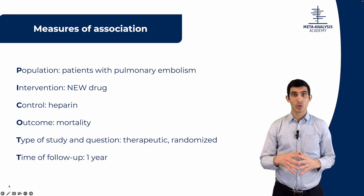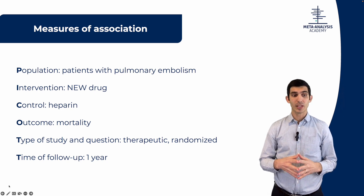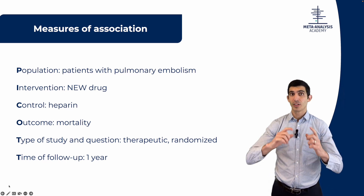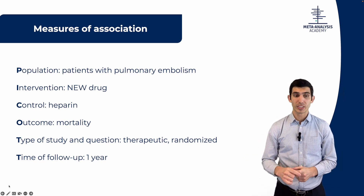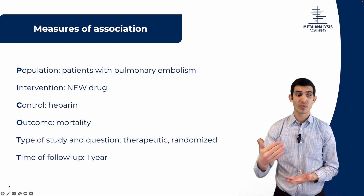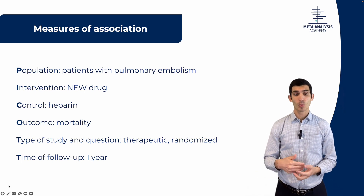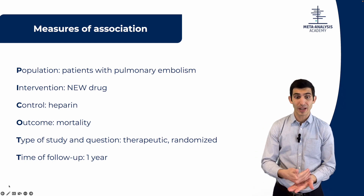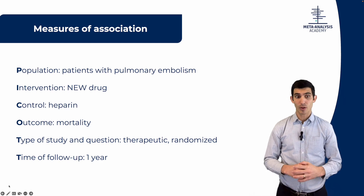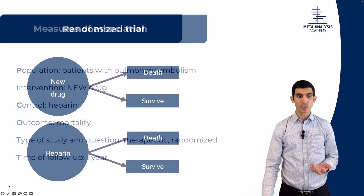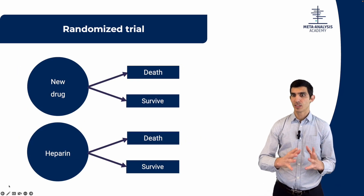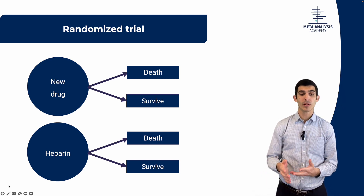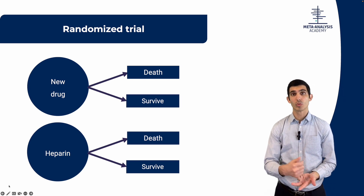Let's assume that this clinical trial is happening and you are studying patients with pulmonary embolism. You're evaluating a new drug to treat these patients, and you want to compare that new drug with heparin. Your outcome is mortality in this population. It's a randomized controlled trial where you follow these patients out for one year. You have patients who receive the new drug, some patients receive heparin, and you're going to follow them to see who dies and who survives.